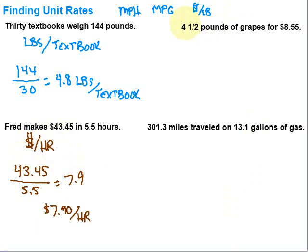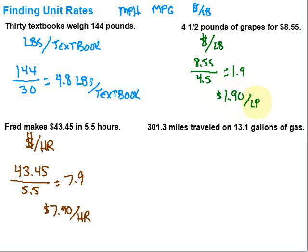Let's take a look at this next one. We've got 4.5 pounds of grapes that we purchased and it was $8.55. Do we want pounds per dollar, or dollars per pound? Usually when I go to the store, they have everything marked in dollars per pound. So let's figure out what it would be. Dollars per pound — dollars on top: 8.55 — divided by the number of pounds: 4.5. So 8.55 divided by 4.5 is 1.9. Again, dealing with money, so two decimal places — $1.90 per pound.